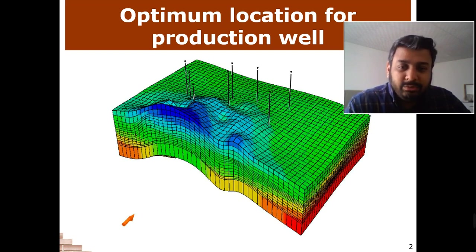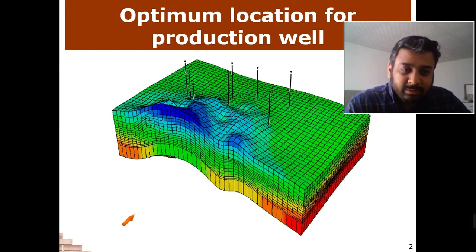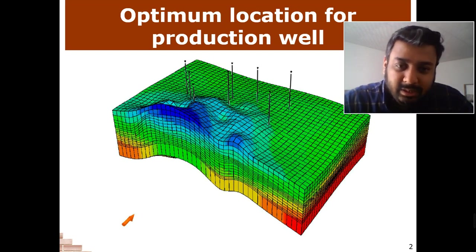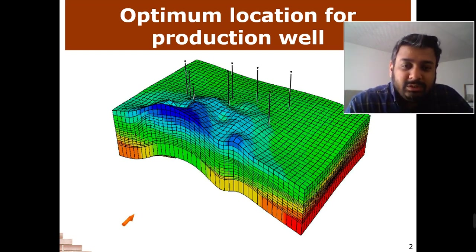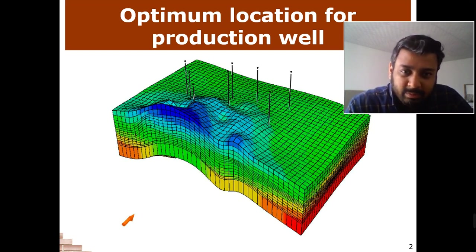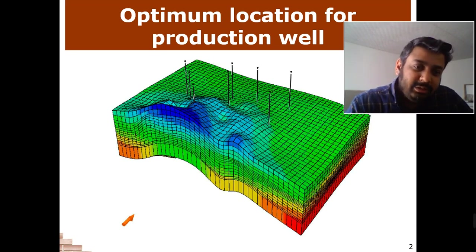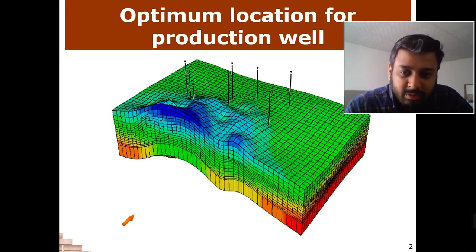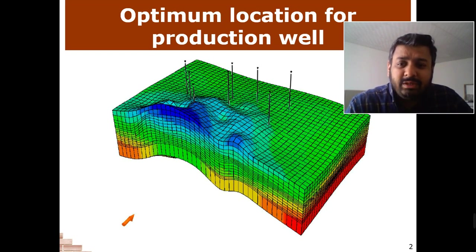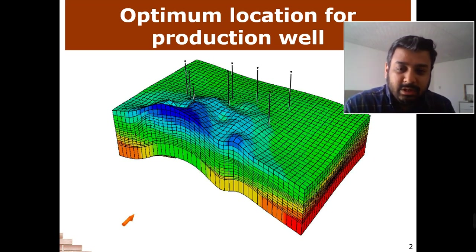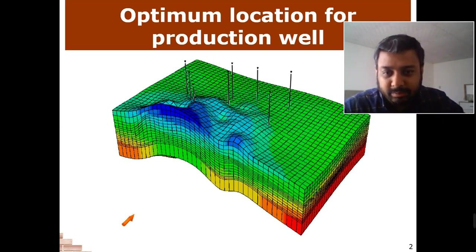So what do we do? We introduce the concept of Python programming. We develop our algorithm and connect it with software like CMG and Eclipse. Once the simulation is finished, the algorithm changes the parameters and puts the well in another grid block, and keeps changing until you get the highest rate of production. The programming algorithm helps you identify exactly where you can put the optimum location for production wells. This is one of the major developments in reservoir simulation engineering in the coming years.